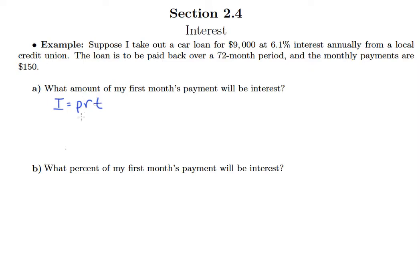So you're using I equals PRT. And our principle here is $9,000 because this is the first month. We haven't made any payments yet. 6.1% is 0.061. And then finally, we're multiplying by the length of time. And remember, the time is always in years. So one month would be 1/12.